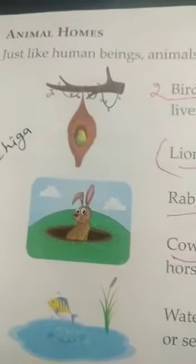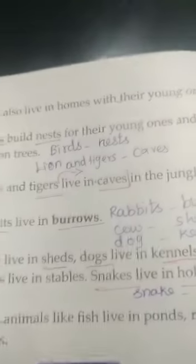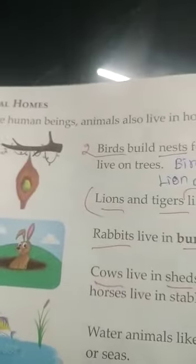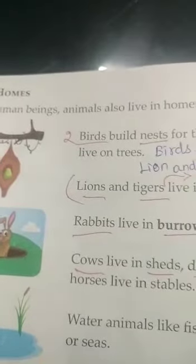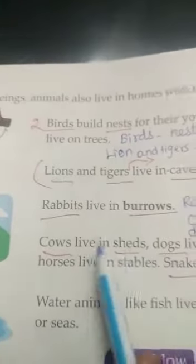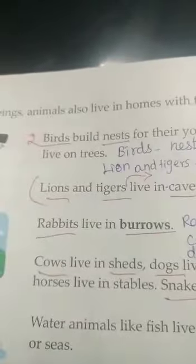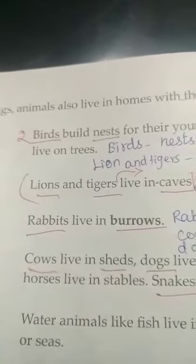Animals' homes. Just like human beings, animals also live in homes — homes with their young ones. The birds build nests for their young ones and live on trees.